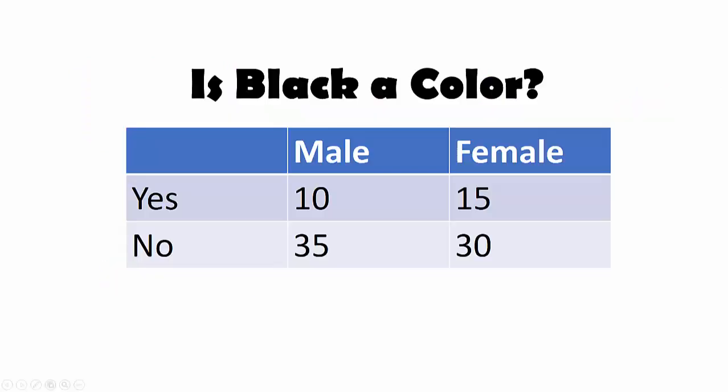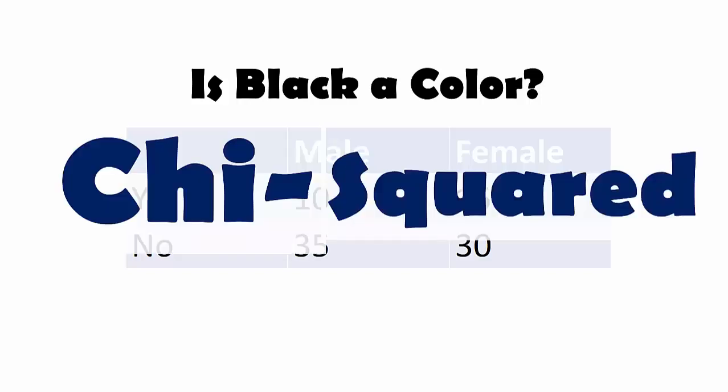It can also be used to test for independence. If you ask a question, is black a color, you're going to get different responses from male and female. If you want to know whether the response is independent of gender, you can use chi-squared distribution test for independence.